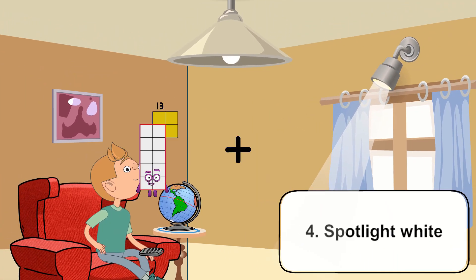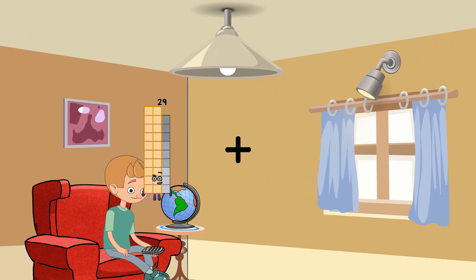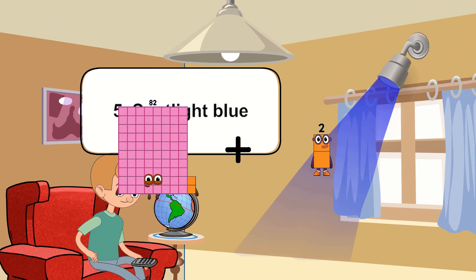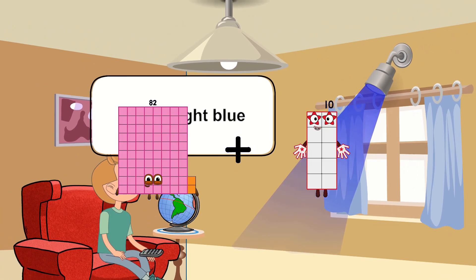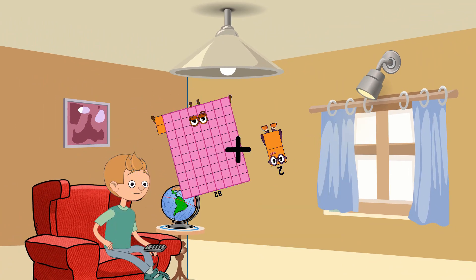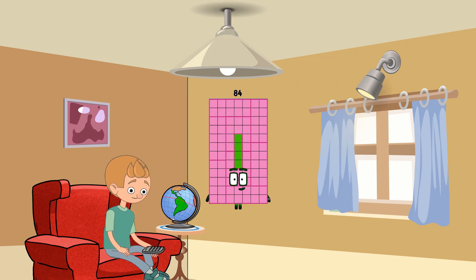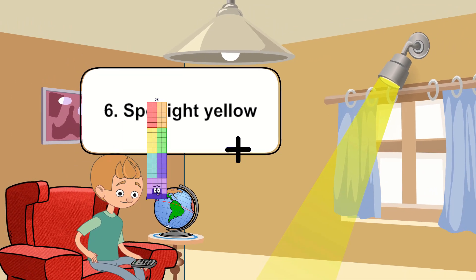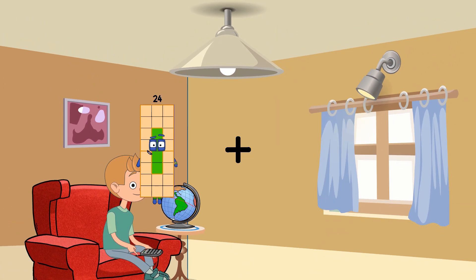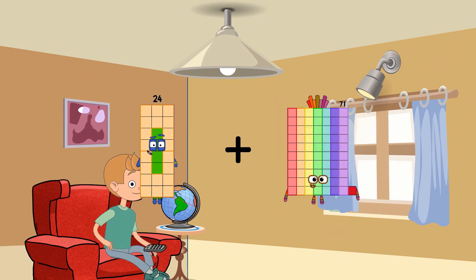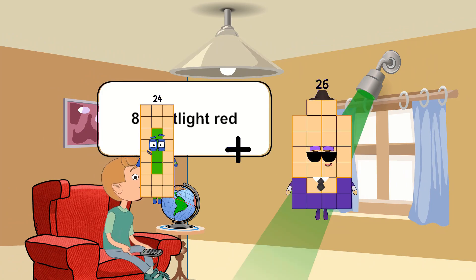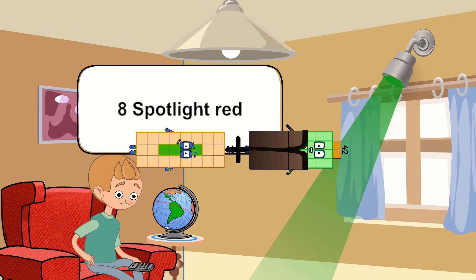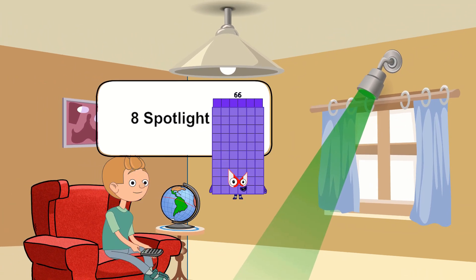Eighty-two plus two equals eighty-four. Twenty-four plus forty-three equals sixty-eight.